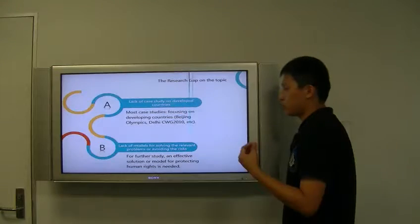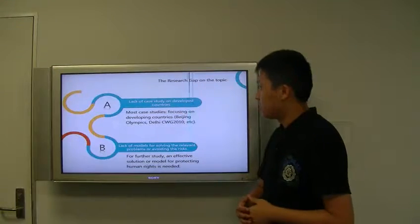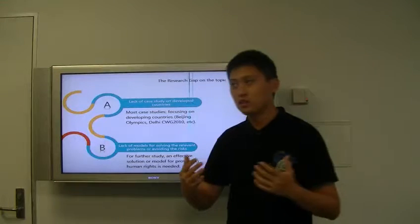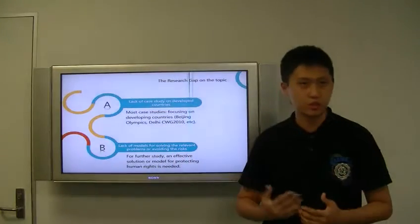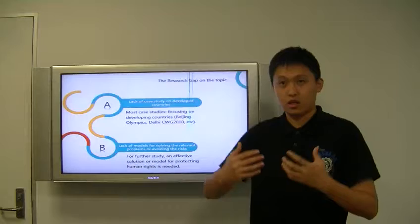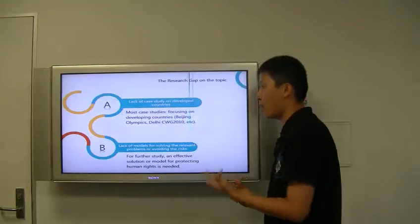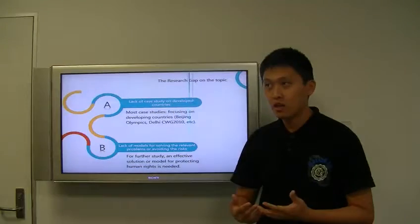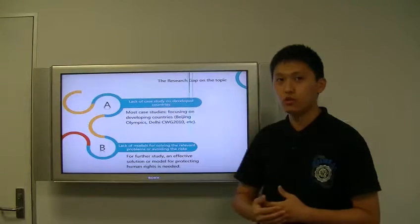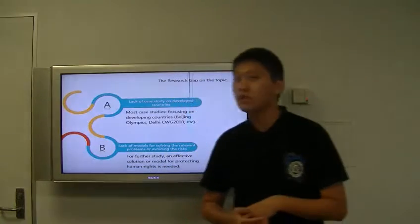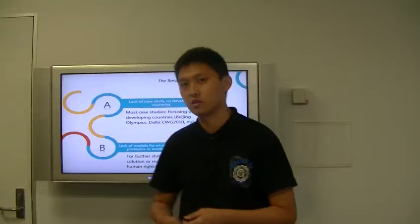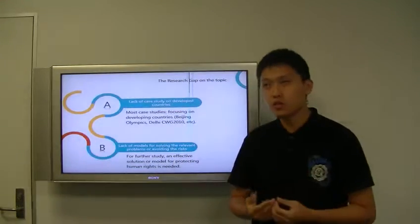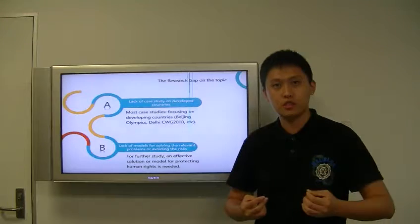So based on the literature review, we find two main points. The first one is the lack of case studies on developed countries. Because people think developed countries have more comprehensive legal systems and better limits for government power, there won't be too many human rights issues. But actually, for example, in the 2002 Salt Lake City Winter Olympics, the committee was involved in very serious problems of corruption and waste of taxpayers money. So this is kind of an invisible and indirect infringement of human rights, like the human right to know the truth.